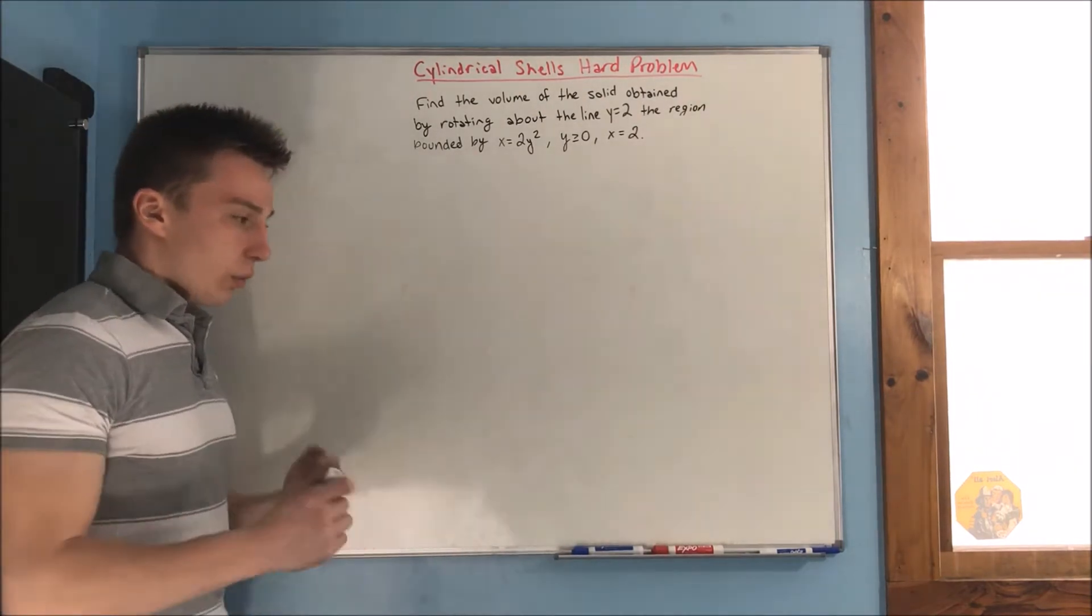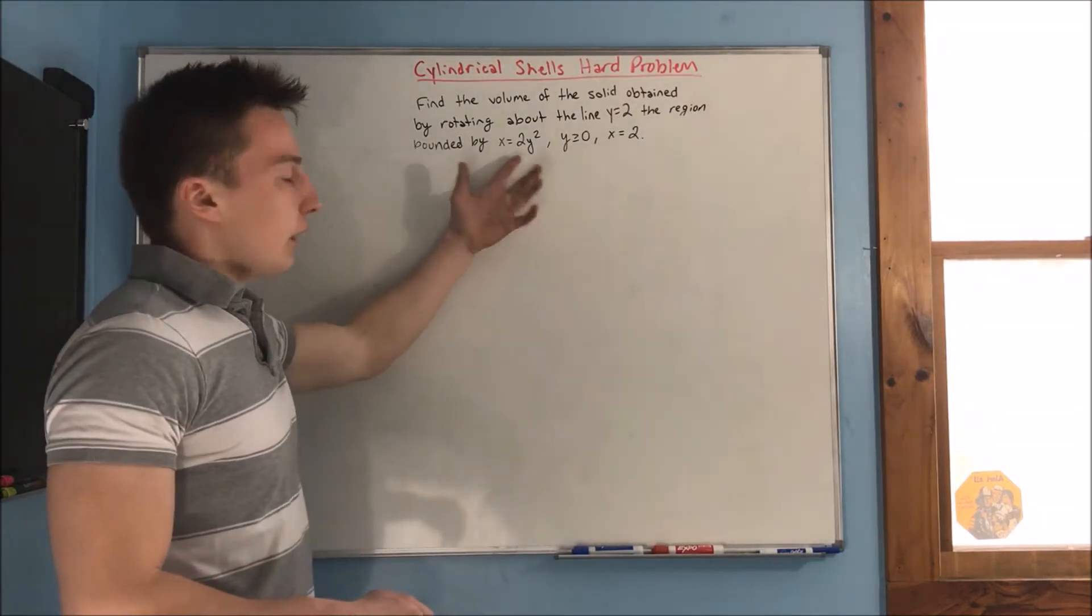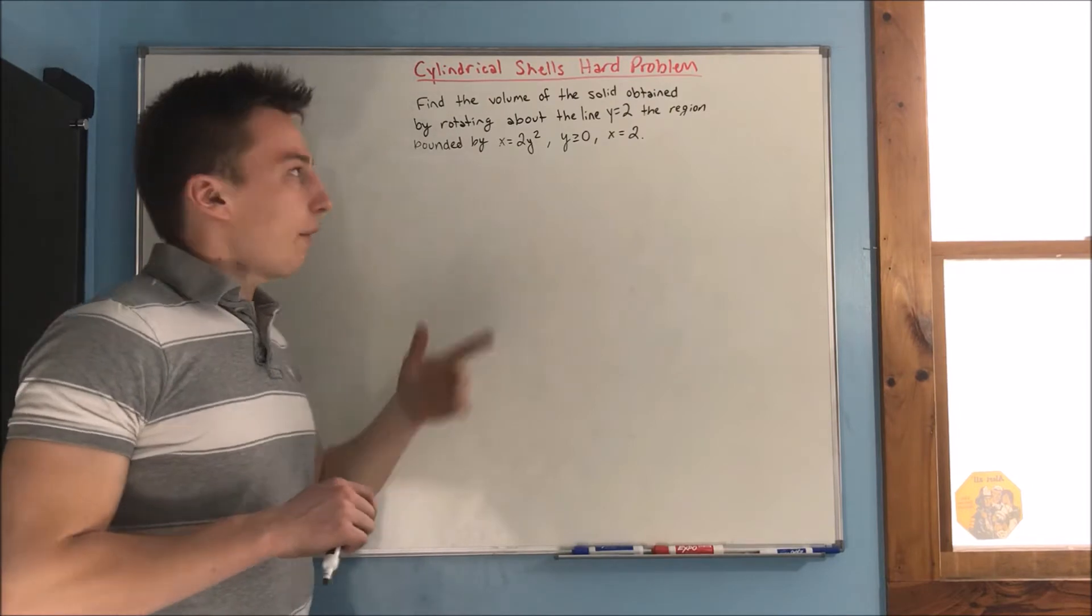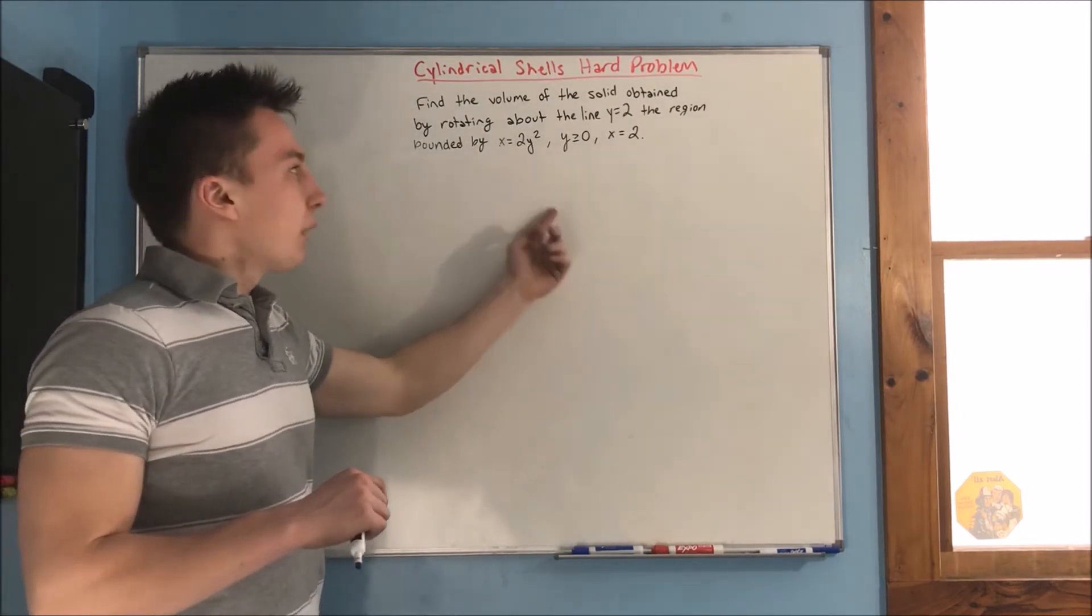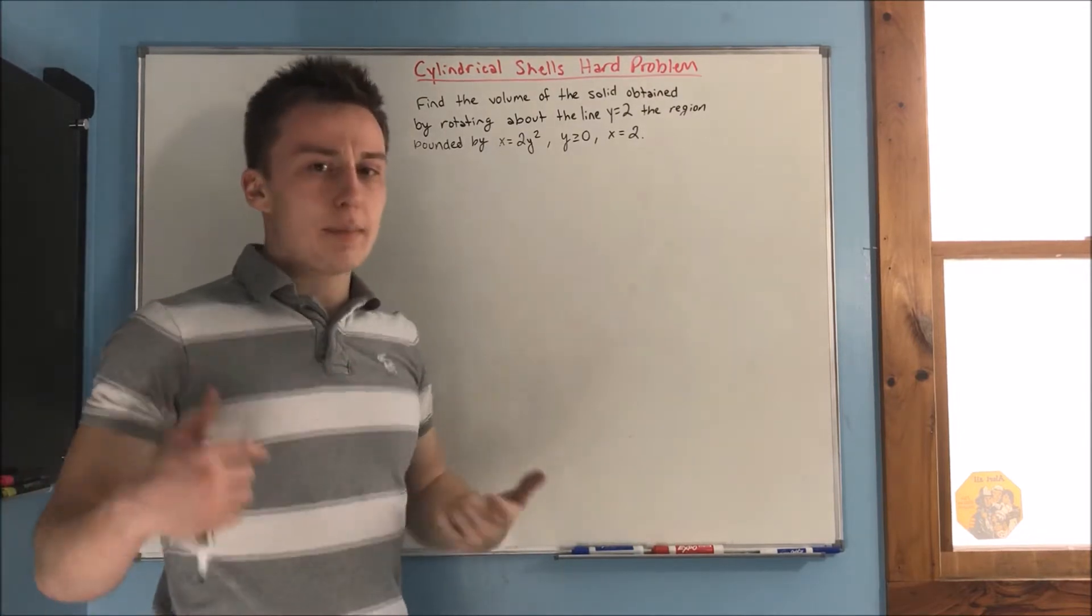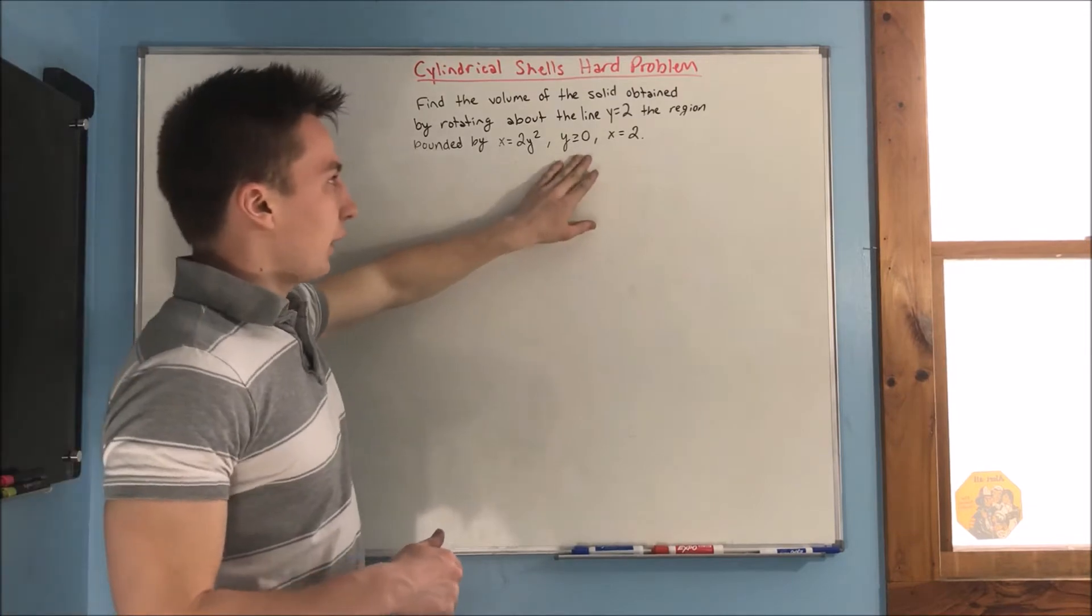Okay, so here's why I see this problem as hard. First off, you're graphing something that, and of course this isn't too hard to graph, the x equals 2y squared, but you're graphing something that's not in terms of y. You're graphing something, you have an inequality here, so you've got to figure out what that means. In this case, it's not too hard, but you still have to figure out an inequality.